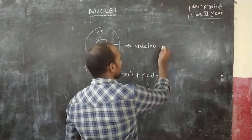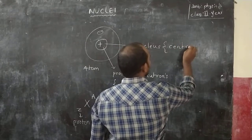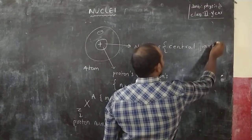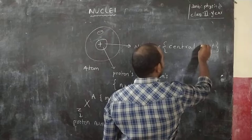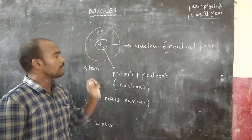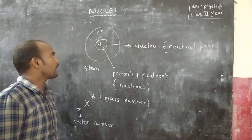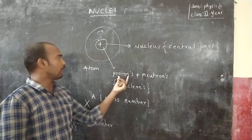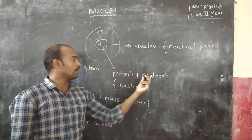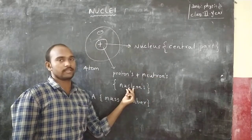This central part is highlighted — that is called the Nucleus. The Nucleus has protons and neutrons. Protons and neutrons are collectively termed nucleons.